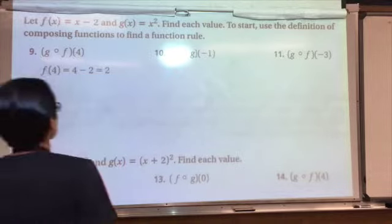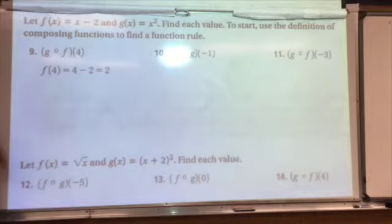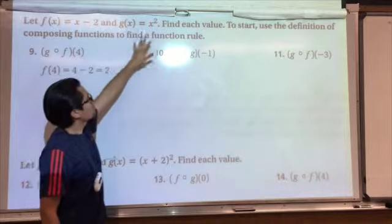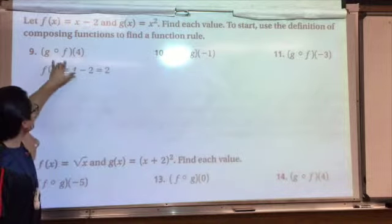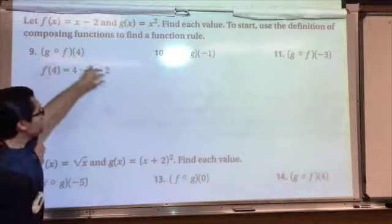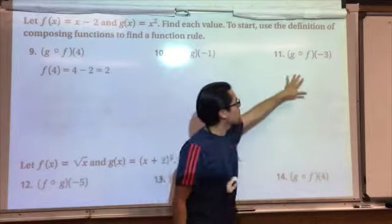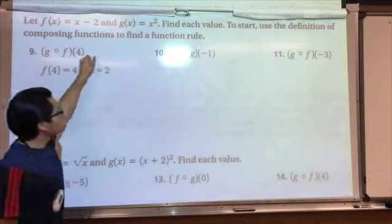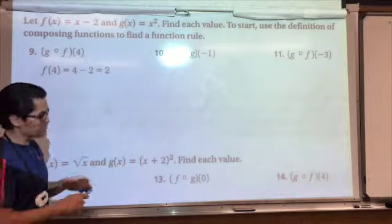Now let's try some compositions of functions. f of x is x minus 2, g of x is x squared. What I want to do is a couple of compositions of f with g for different x values, for negative 1 and negative 3.